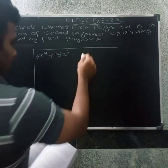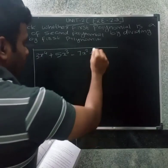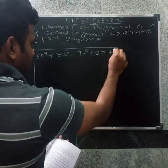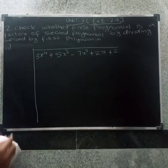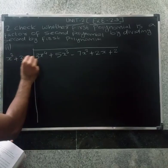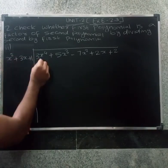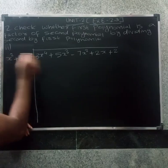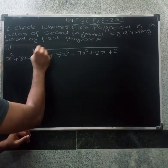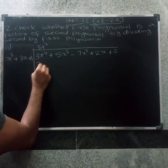Minus 7x squared plus 2x plus 3x squared plus 3x plus 1. This is the same concept. So we have x squared and we have 3x to the power 4. So we have 3x squared. So we have 3x to the power 4.